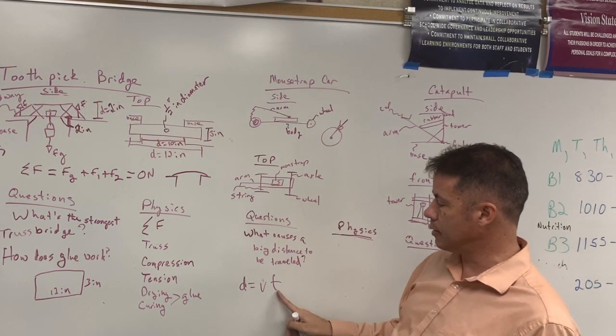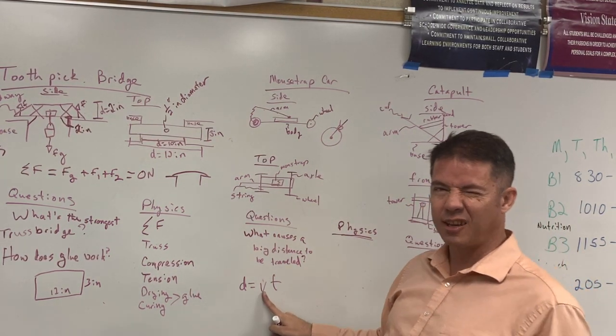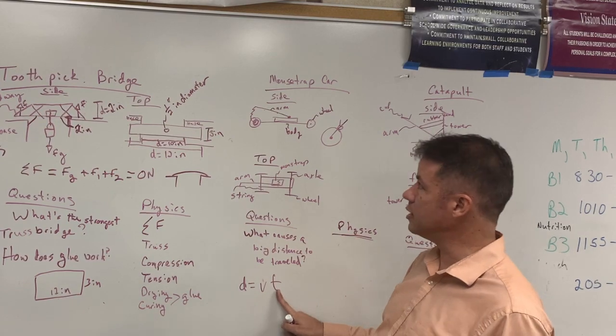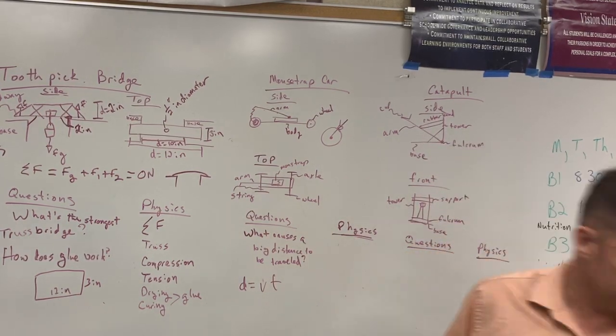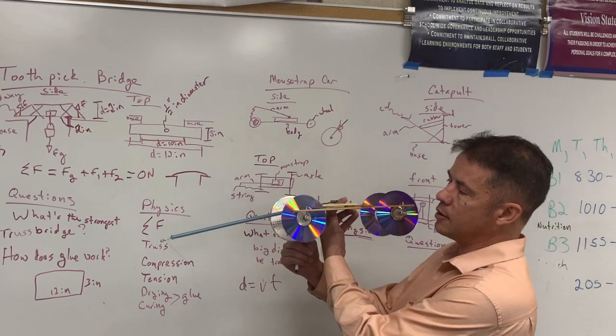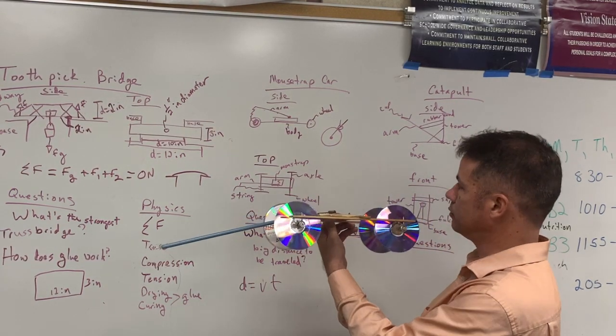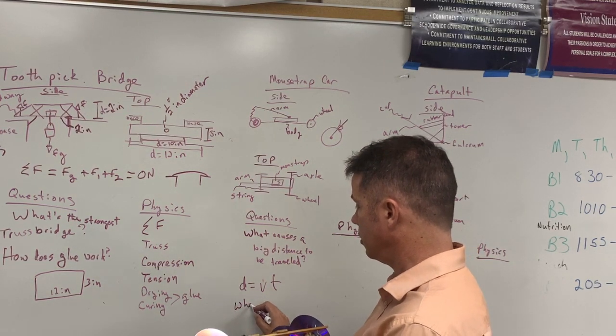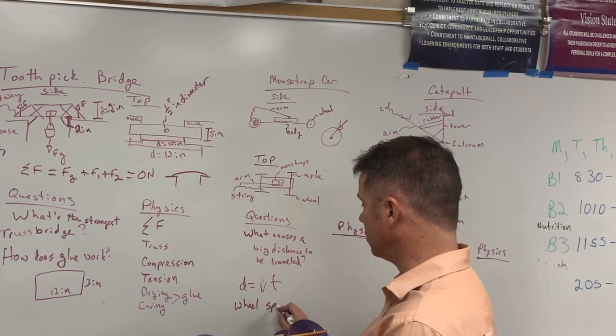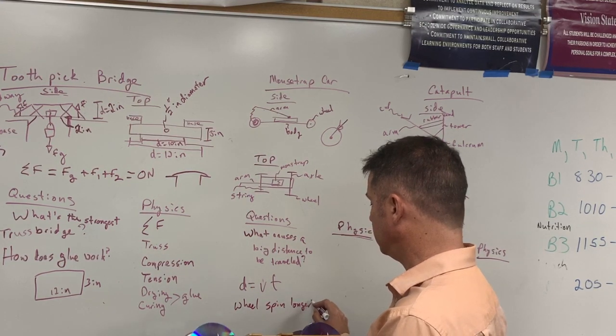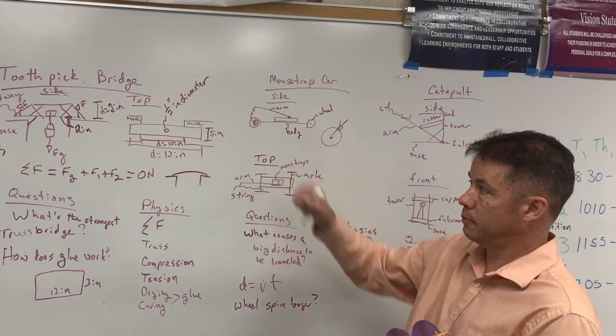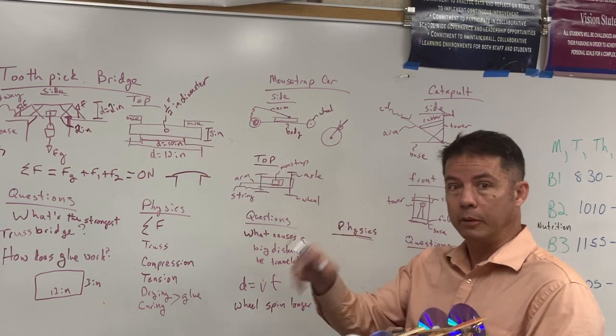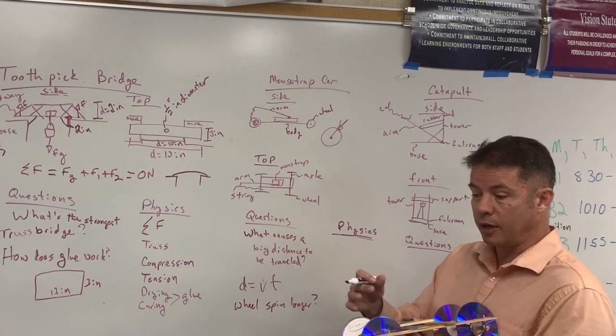So how can I increase, because can I necessarily increase the velocity? Maybe, maybe not. We'll come back to that. But let's think about time. From a sheer increasing of time, how can I make this wheel spin for longer? So that wheel spin longer? It might be length of string, right? If I've got a longer string pulling for longer, increase the time. But to get a longer string, what do I have to have?